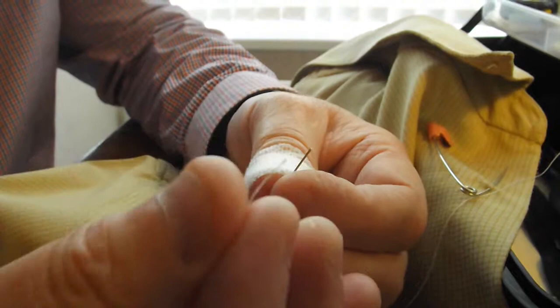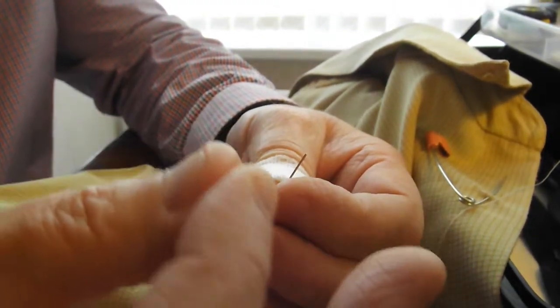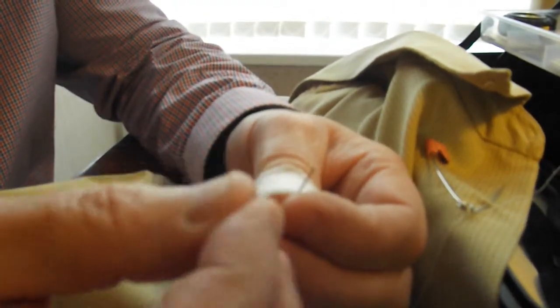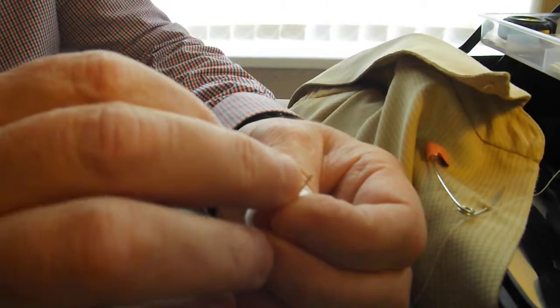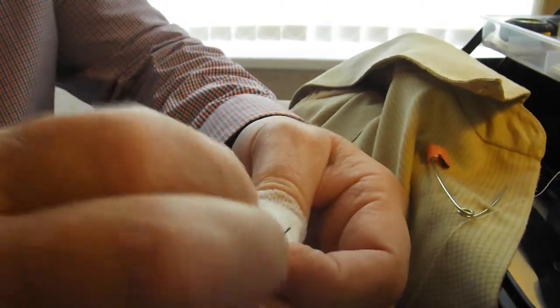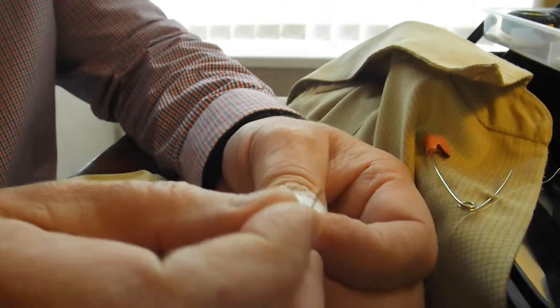Now, with threading up a needle, there's basically two ways you can do it. You can buy these little instruments which will go through the eye of the needle. You put that through and then pull it. It's a great little piece of kit.